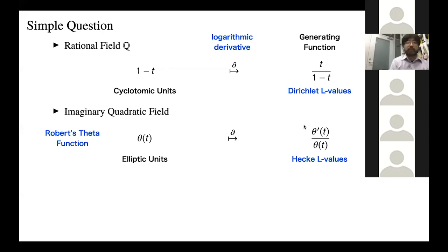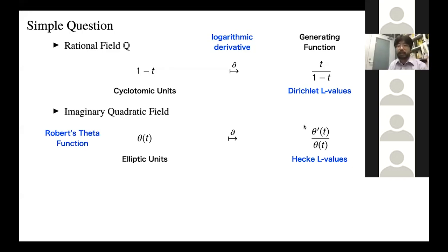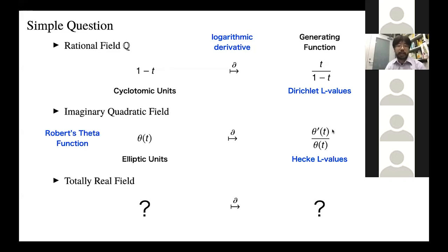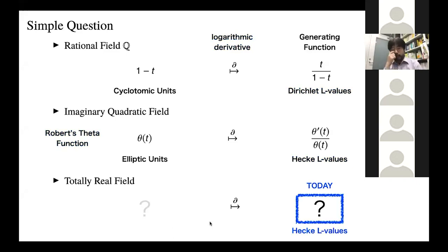In the case of imaginary quadratic fields, there's the Robert's theta function, which is related to elliptic units. If you take the logarithmic derivative, you get theta prime t over theta t, which is known to be related to Hecke L-values. So the simple question is: what do we have in the totally real field case? What we want to talk about today is some generating function in this case which gives Hecke L-values, and we want this to be very canonical.